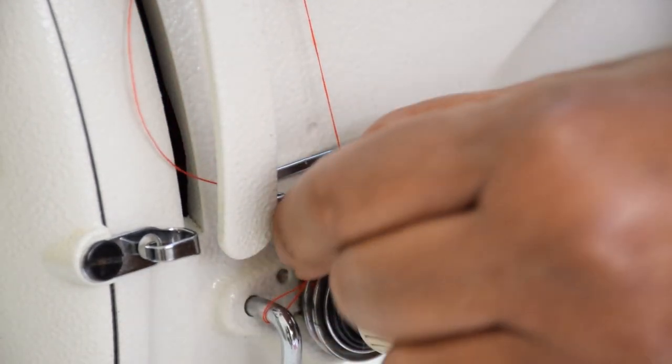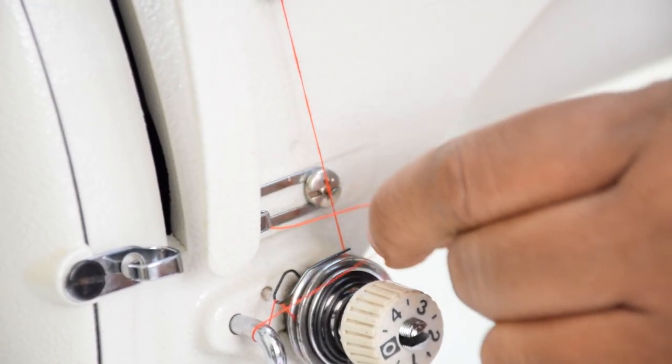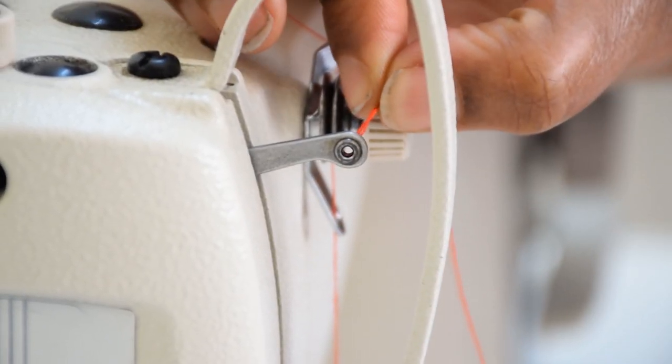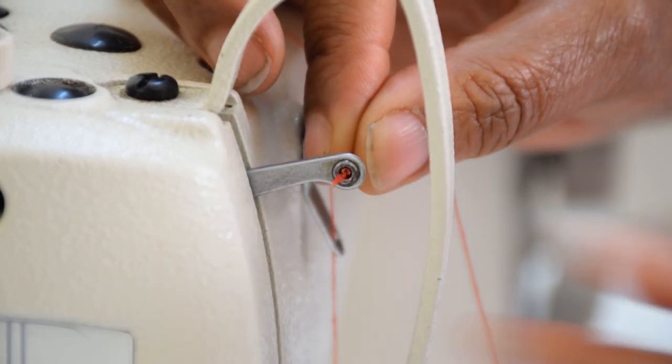Ensure your thread does not get tangled like you can see. It should be straight. Next, we go to the take-up lever. Ensure your thread goes into the take-up lever.